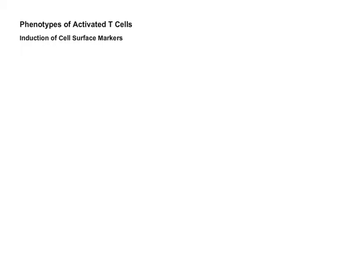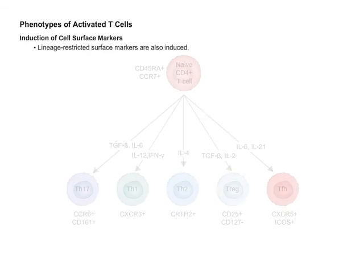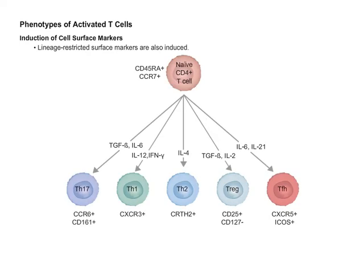In addition to the induction of generic T-cell activation markers, other cell surface markers are induced in a lineage-restricted fashion. Differentiated CD4-positive effector subsets have been shown to express signature surface markers. Th1 cells, for example, express the chemokine receptor CXCR3, while TFH cells express CXCR5. The C-type lectin molecule CD161 can be used to identify TH17 cells, while the prostaglandin receptor CRTH2 can be used to distinguish TH2 cells.